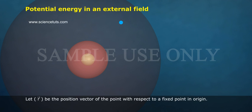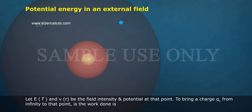Let R bar be the position vector of the point with respect to a fixed point in origin. Let E R bar and V R be the field intensity and potential at that point.